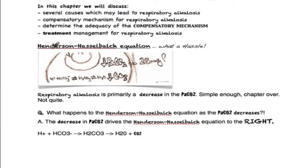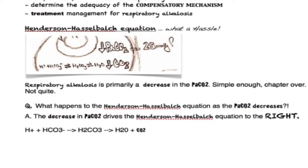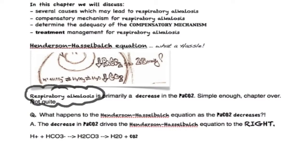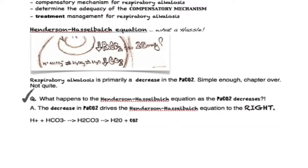Let's quickly take a look at the Henderson-Hasselbalch equation. We know that respiratory alkalosis is primarily a decrease in the PaCO2. What happens to the Henderson-Hasselbalch equation as the PaCO2 decreases?